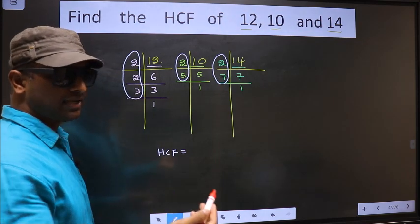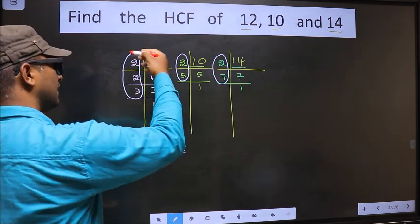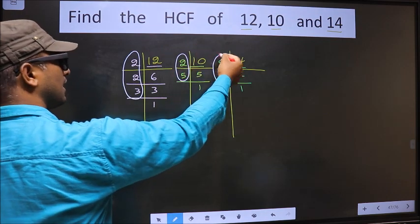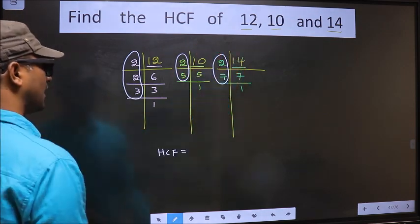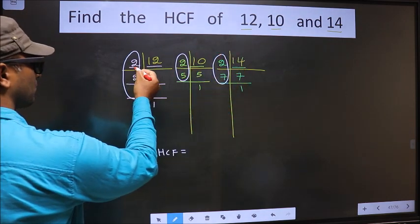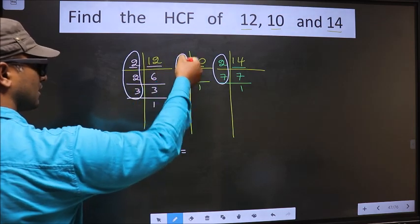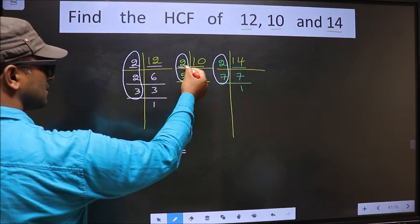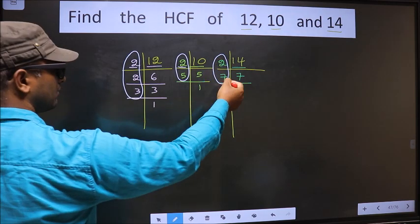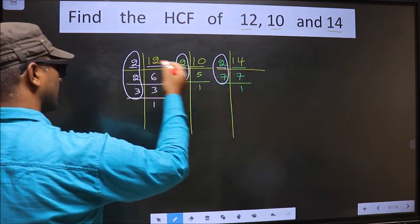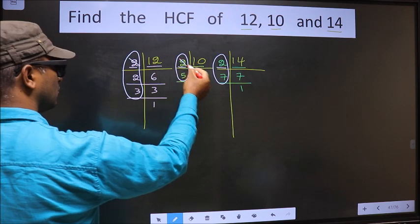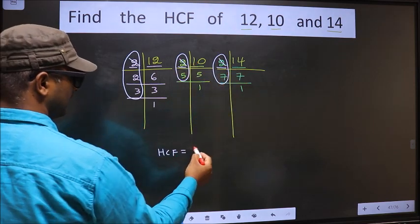Now let us find the numbers which are present in all three places. Starting with the number 2. Do we have 2 here? Yes. Do we have 2 in the next place? Yes. So now you cut 2 and write it here.